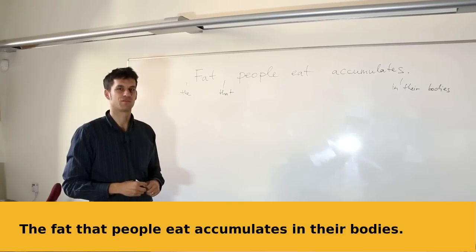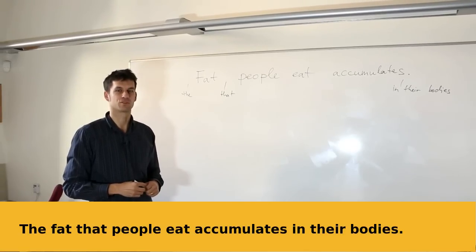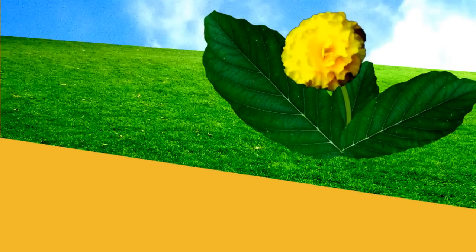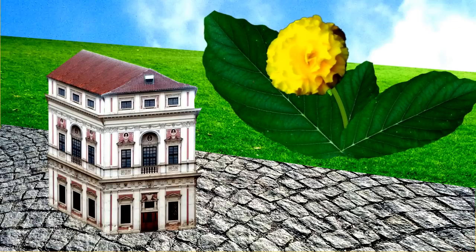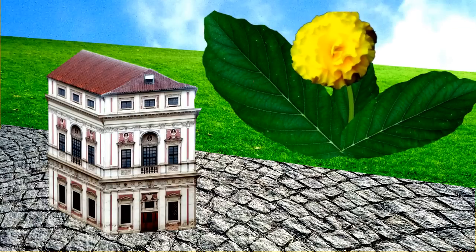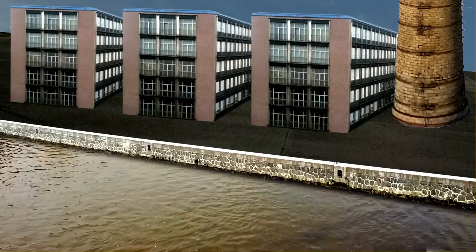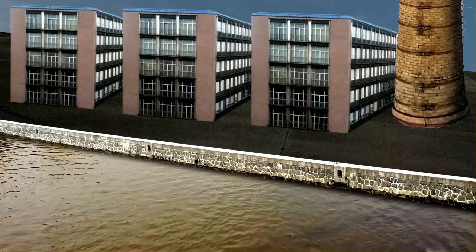You don't need to go that far down the garden path to confuse a computer program. Take the sentence, the plant is next to the bank. Is this a flower or a factory? And is this a financial institution or a site over a stream?